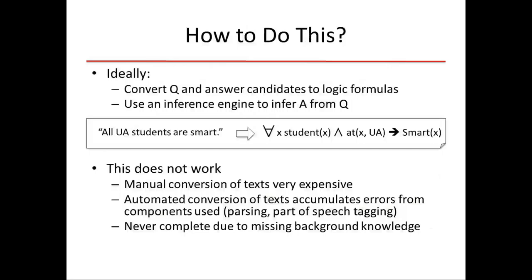So how would you do this? Ideally, you want to convert the question and answer candidates to logic forms — predicate logic formulas. For example, 'all your students are smart' can be phrased as: for any X, if X is a student and X is at UA, then X is smart. Then you can use any generic inference engine from your AI course to basically infer one from the other.